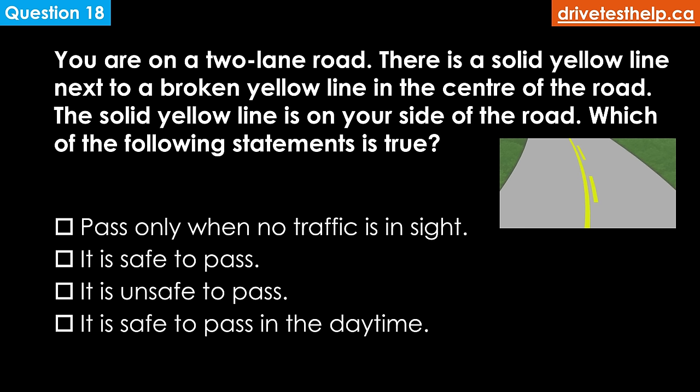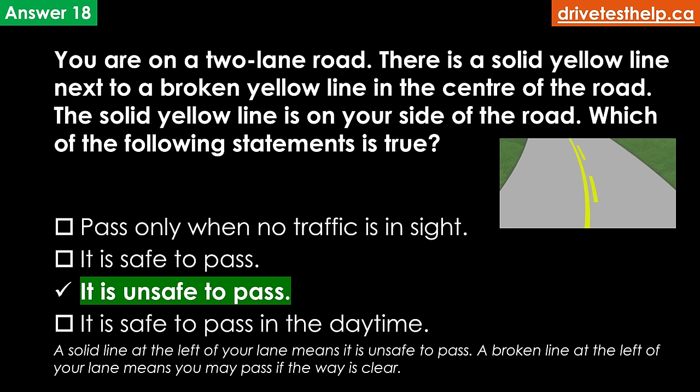You are on a two-lane road. There is a solid yellow line next to a broken yellow line in the center of the road, and the solid yellow line is on your side. Which of the following statements is true? Options: pass only when no traffic is in sight; it is safe to pass; it is unsafe to pass; it is safe to pass in the daytime. The correct answer is it is unsafe to pass. A solid line at the left of your lane means it is unsafe to pass. A broken line at the left of your lane means you may pass if the way is clear.